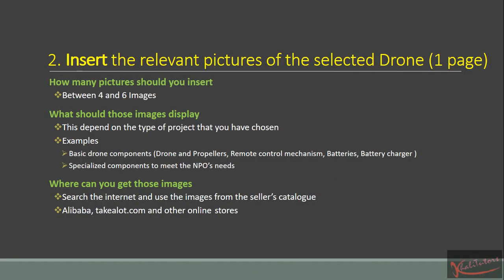Here are some of the questions that you might have, which I hope to answer in this tutorial session. How many pictures should you insert? What should those images display? And where can you get those images? You should include about between 4 and 6 images. In most supplier websites, they have between 4 and 6 images, and I think that's all that you need for this portfolio.